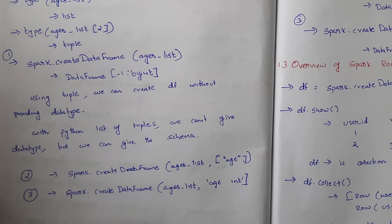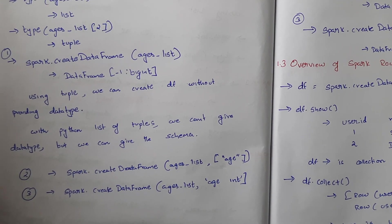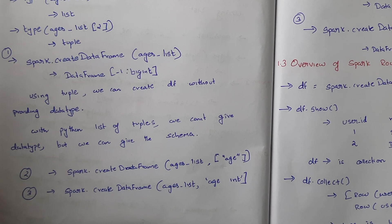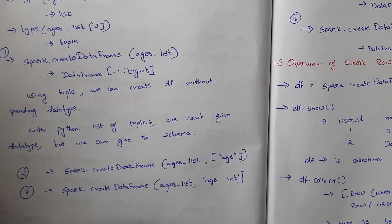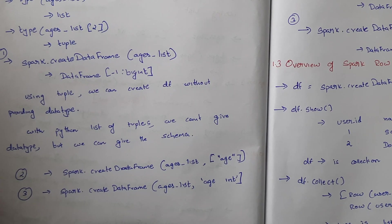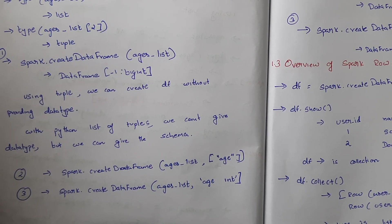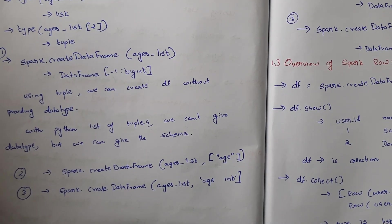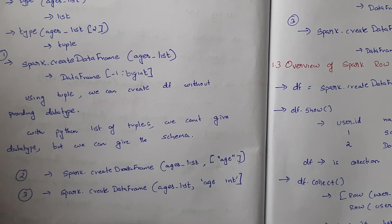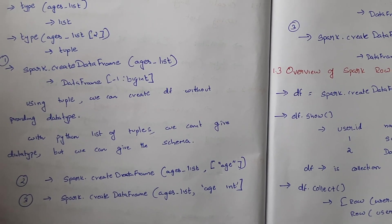In the second approach we can also pass both the column name and the data type together — for example: spark.createDataFrame(ages_list, schema='age integer'). This means the column name will be created as 'age' and the data type will be considered as integer.